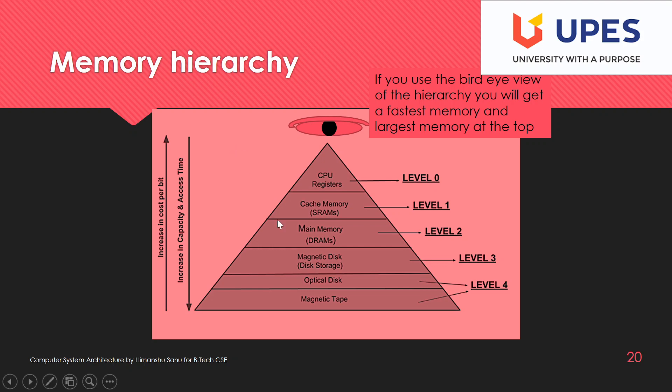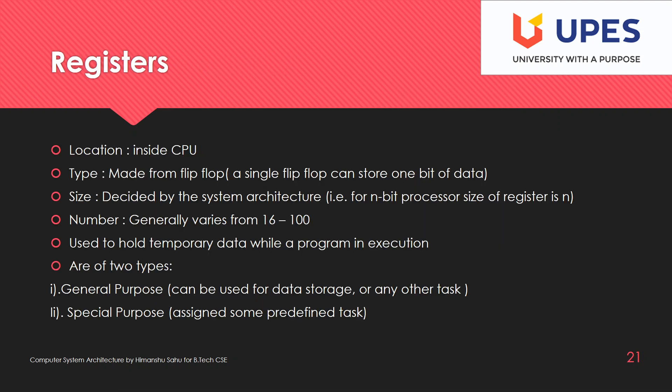Cache memory is divided into different levels: L1 cache, L2 cache, and L3 cache. Registers are located inside the CPU and are made from flip-flops. Flip-flops are digital circuits which can store one bit of data — they can store either zero or one.